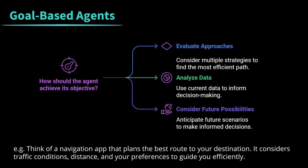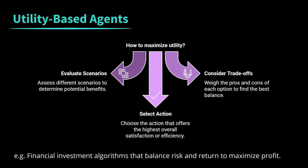Moving on to goal-based agents. Goal-based agents have a specific objective in mind — they don't just act, they plan. These agents evaluate different approaches to achieve their desired outcome and choose the most efficient path, considering both current data and future possibilities. For example, a navigation app that plans the best route to your destination by considering traffic conditions, distance, and your preferences. Next are utility-based agents, which aim to maximize a specific utility or value. They use complex reasoning to evaluate different scenarios, and use cases include resource management systems and financial investment algorithms that balance risk and return to maximize profit.